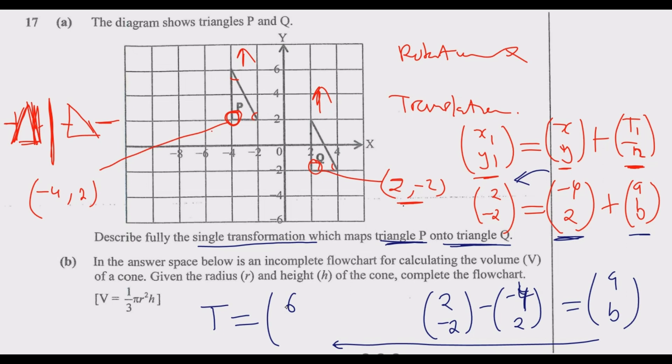This translation vector tells me we need to move 6 steps to the right along the x-axis: 1, 2, 4, 6. Then move 4 steps downward: 2, 4. That's how we arrive at this position. Moving 6 right and 4 down for each corresponding point.